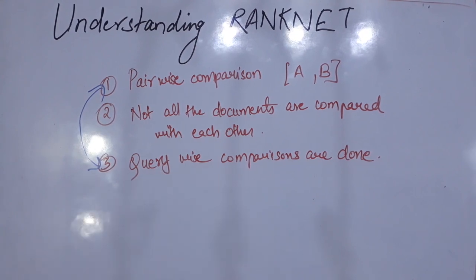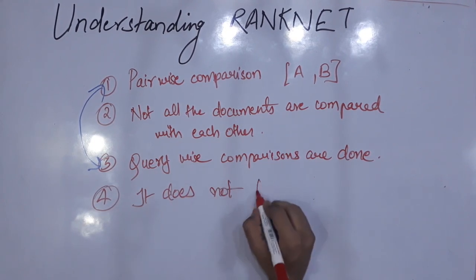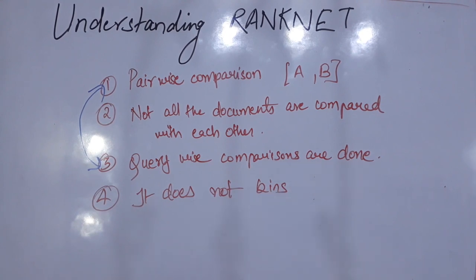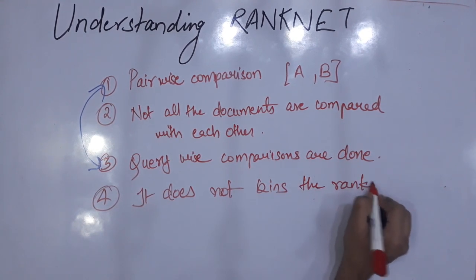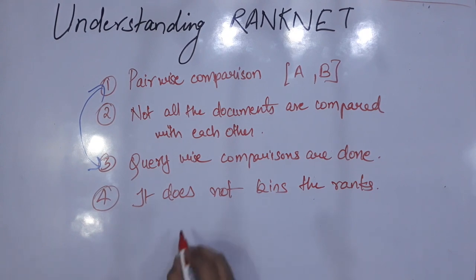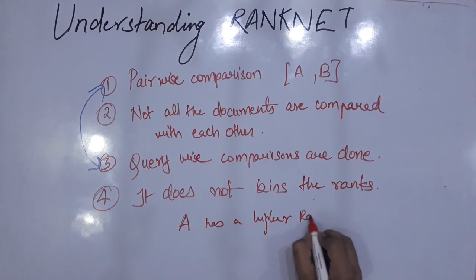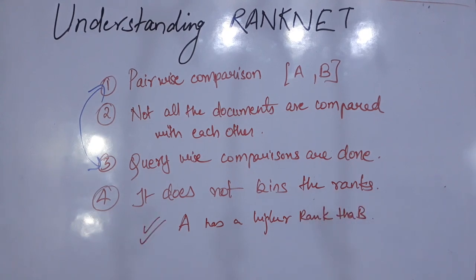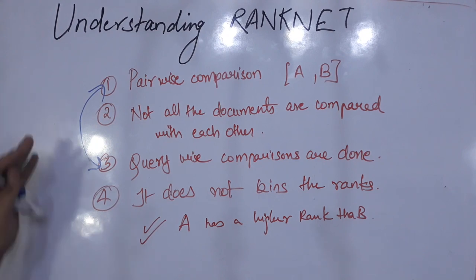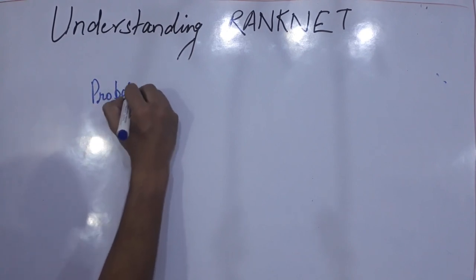What RankNet does instead is it does not assign ordinal numbers to documents. It says: what is the need of giving a particular ordinal number to a document? If we say that A has a higher rank than B, this statement alone is self-sufficient to rank A higher than B, instead of requiring a specific number to prove this.